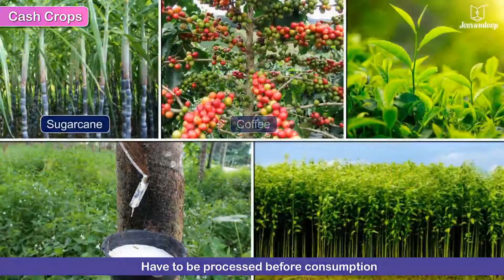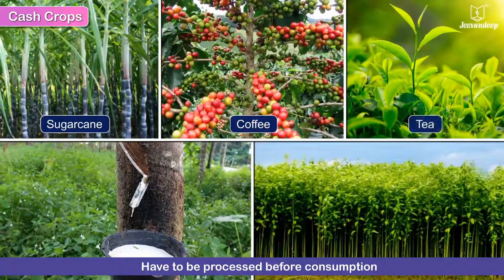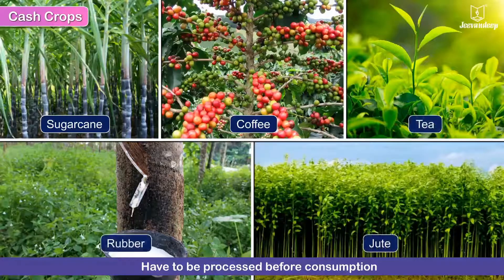Sugarcane, coffee, tea, rubber, and jute cannot be used directly but have to be processed before consumption.